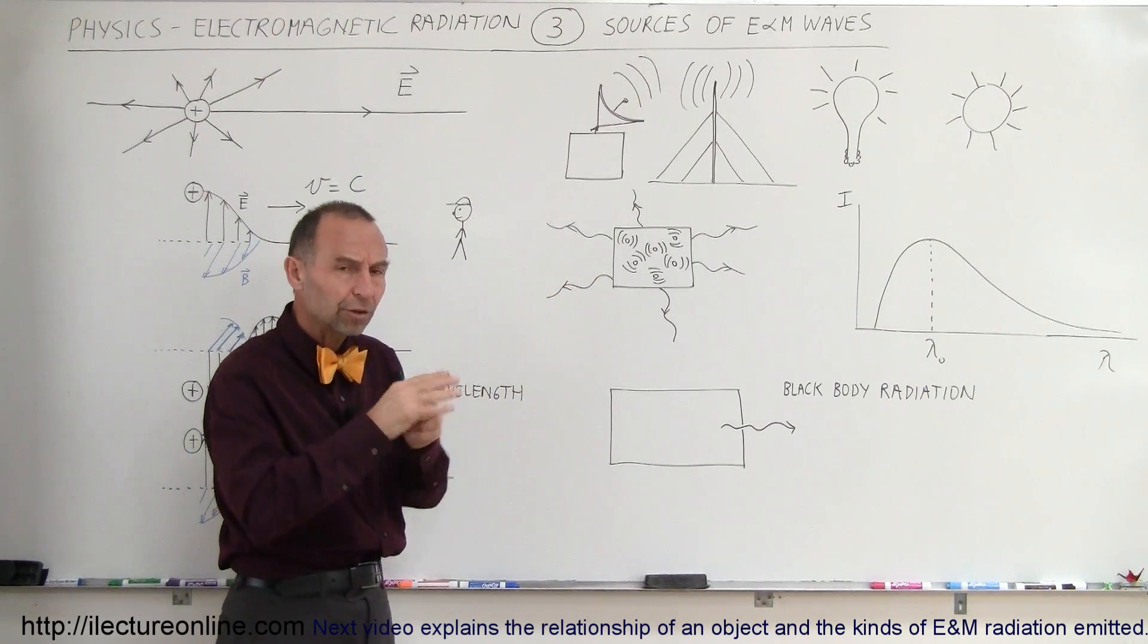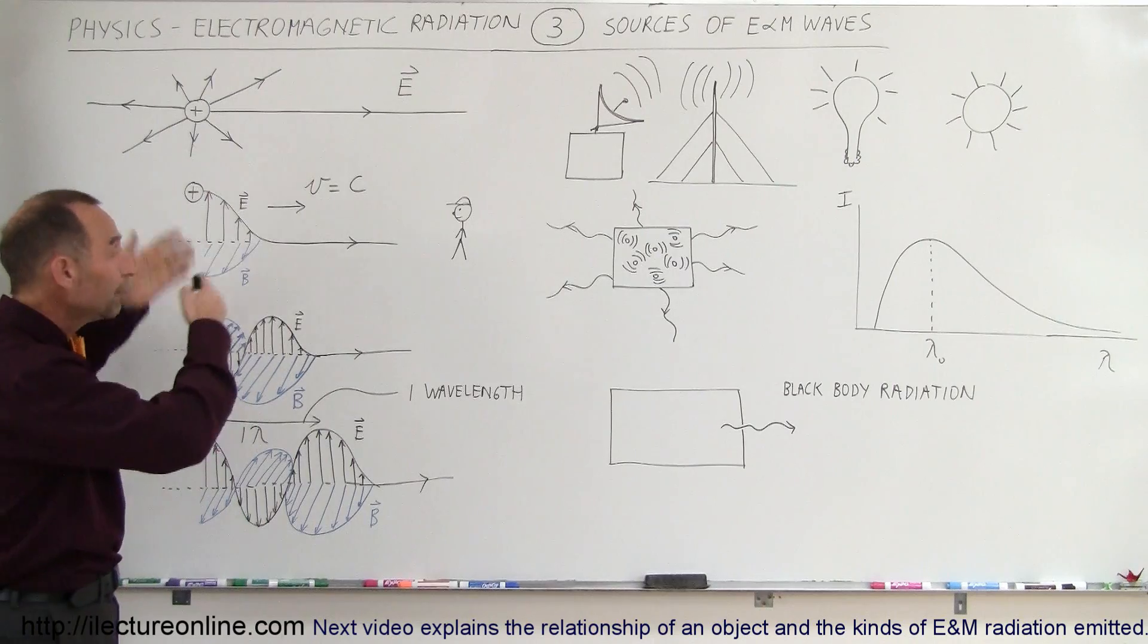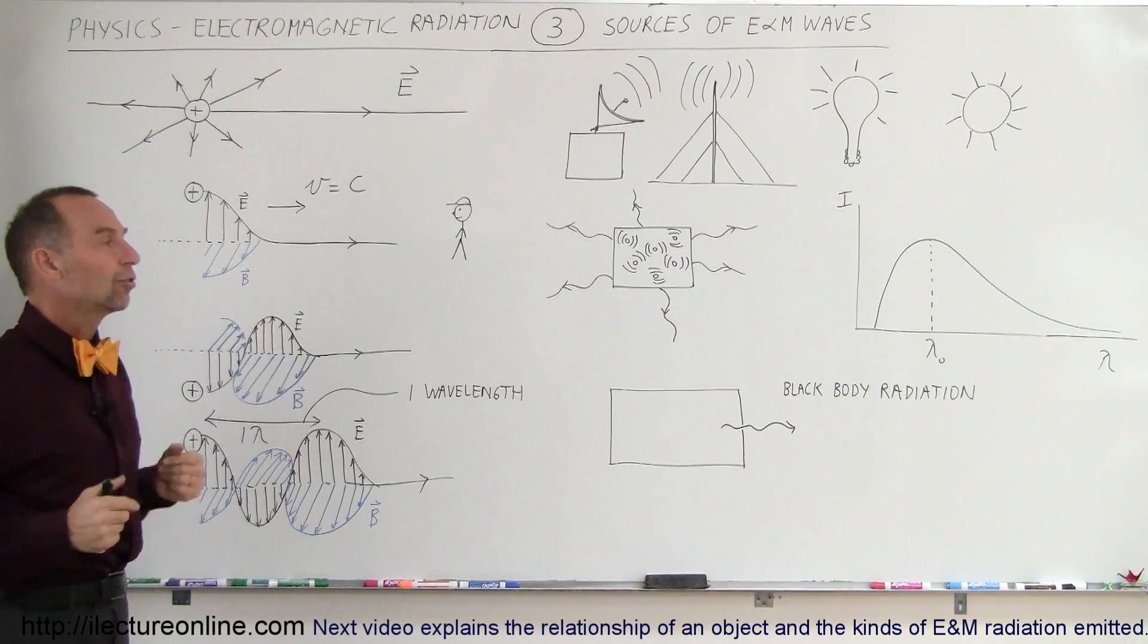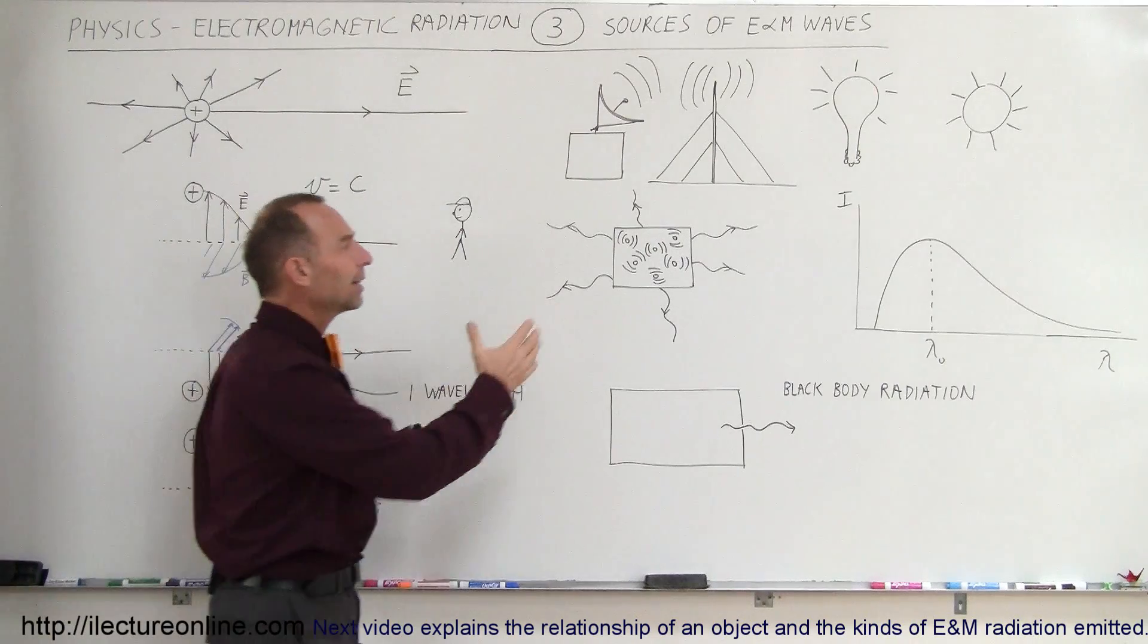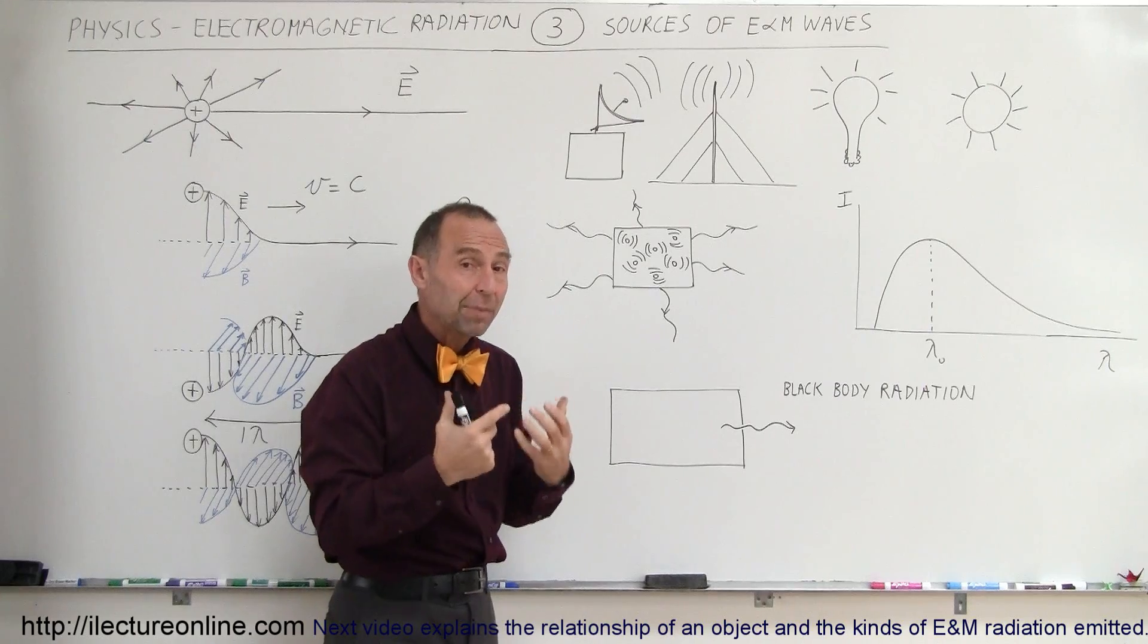So as they vibrate back and forth, the electric field around them, just like we illustrated right here, will be oscillating up and down, and that oscillation will then move outward at the speed of light.